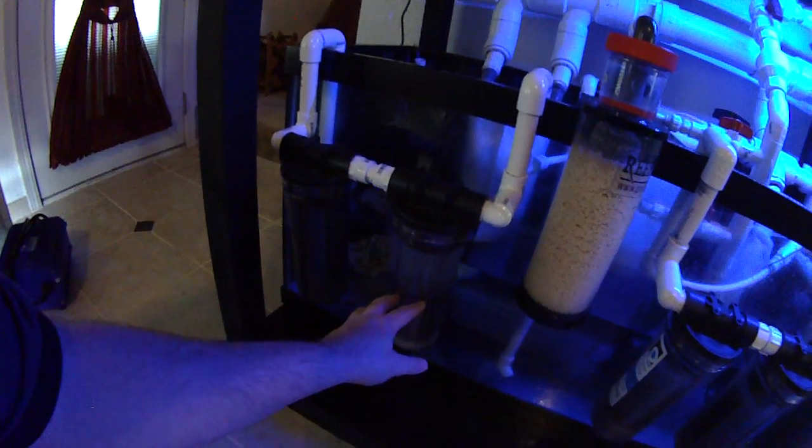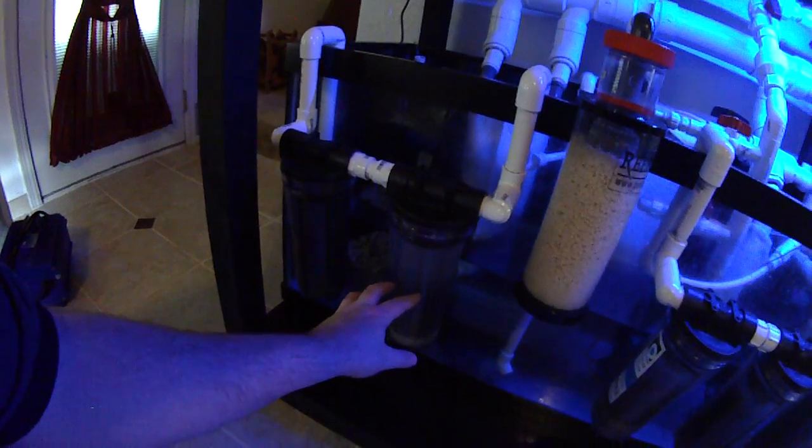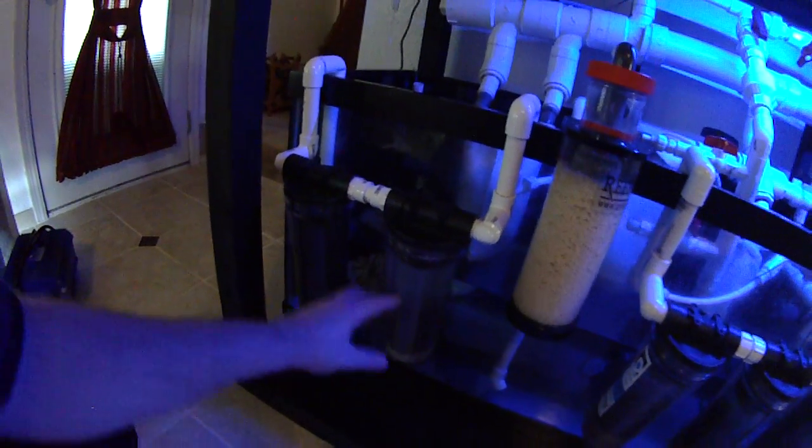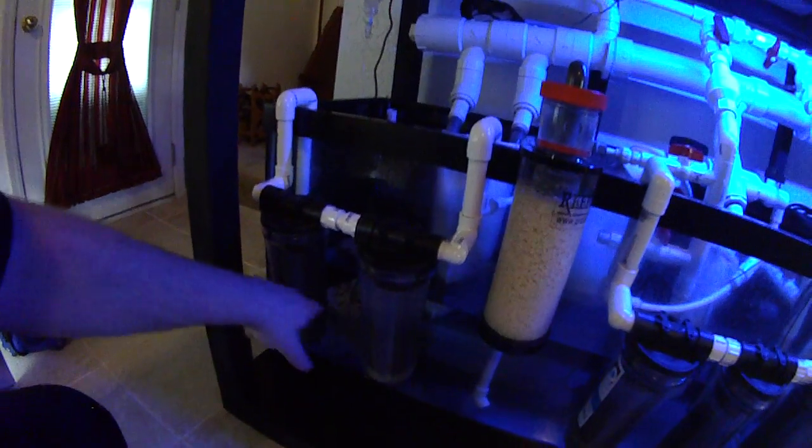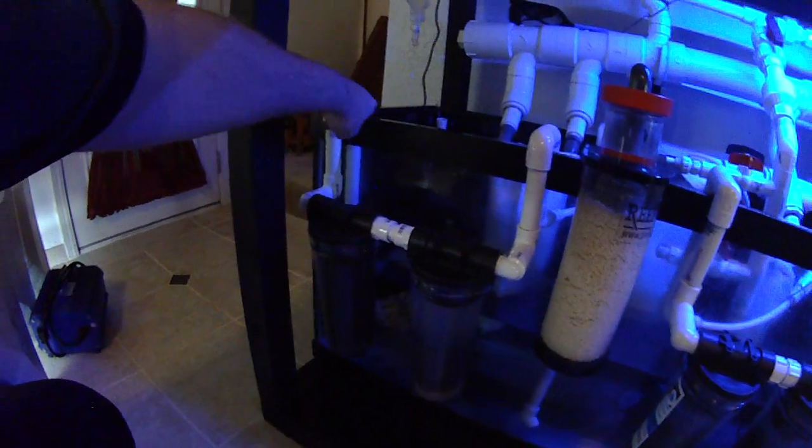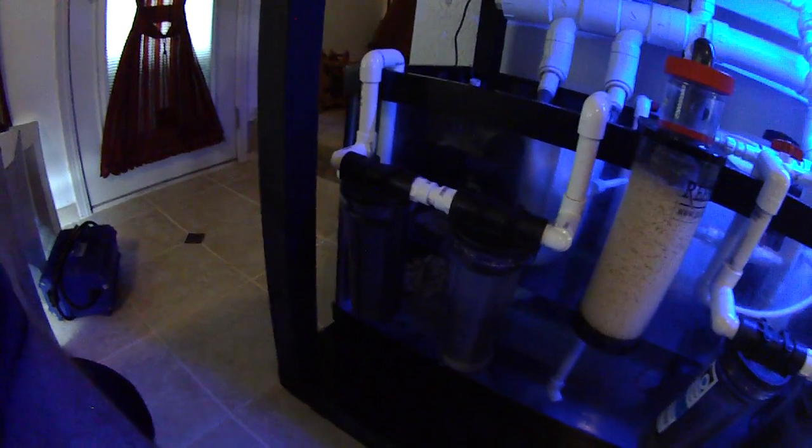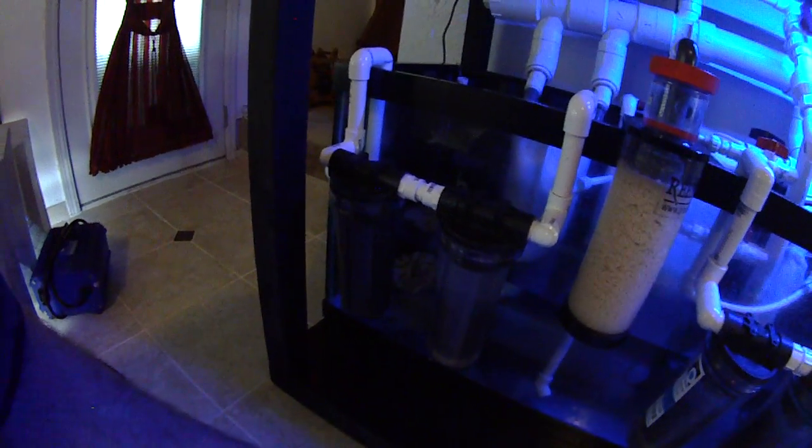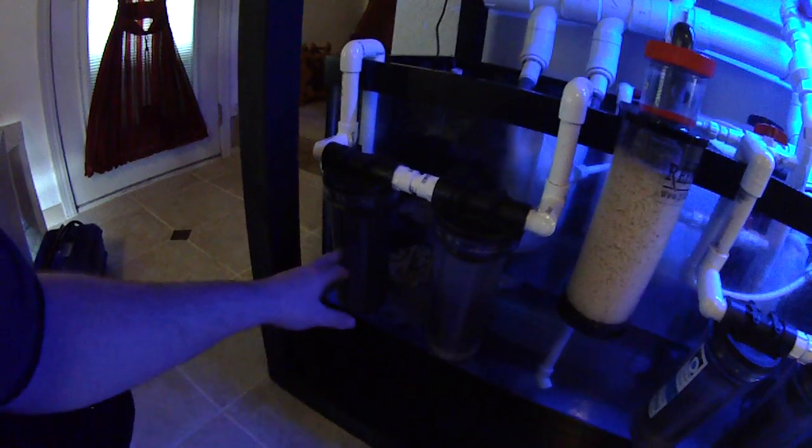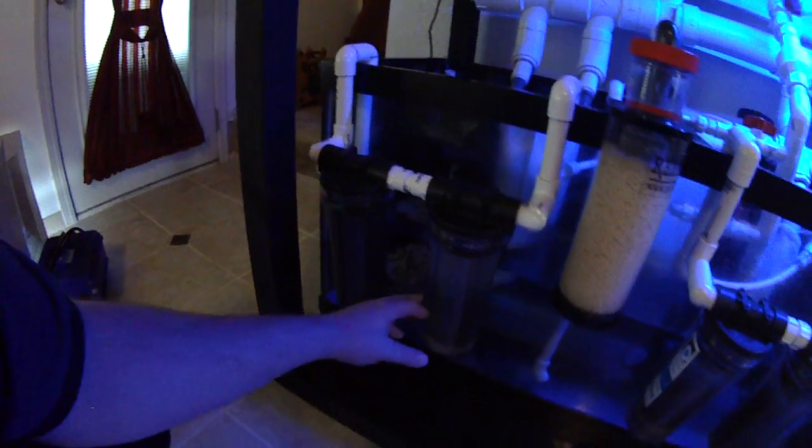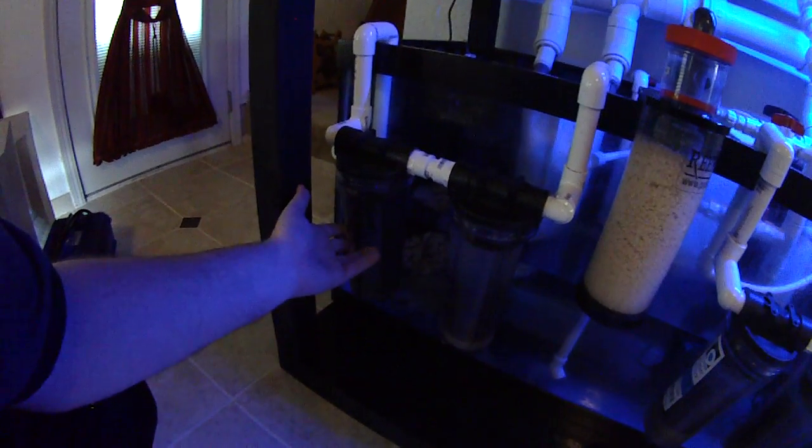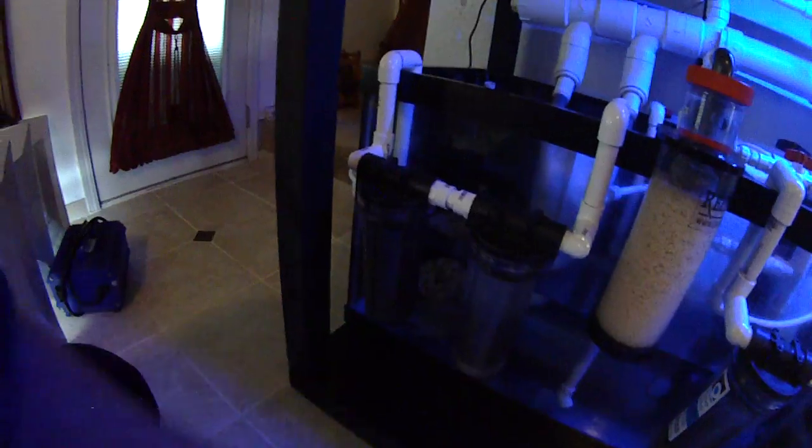You could also put a sediment filter in here. Now, if you're going to use this for a reactor, a GFO reactor, you need to put either GFO and then on the output put a sock to catch any particles of GFO that escape. Now, what I've done here, instead of using a sock to catch the GFO particles, is the second chamber is carbon. That way, if any particles break free, the carbon catches it. So keep that in mind.